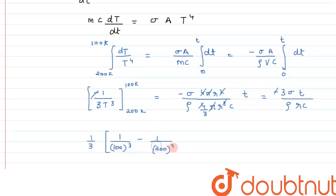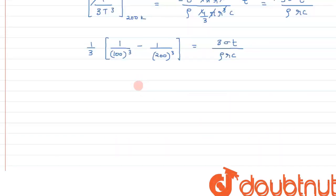1/3 can be taken out as common, so we're left with 1/T³, which is 1/(100)³ minus 1/(200)³, and that equals 3σt/(ρrc). This can be solved as (8-1)/7, which we can write as 7×10⁶ divided by 8×10¹², and this equals 3σt/(9ρrc).